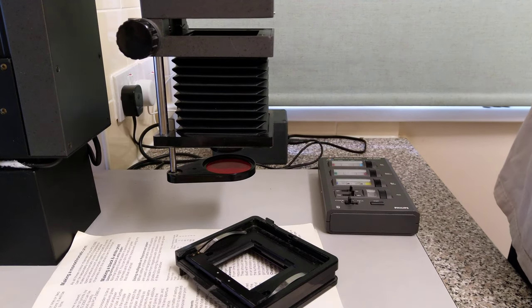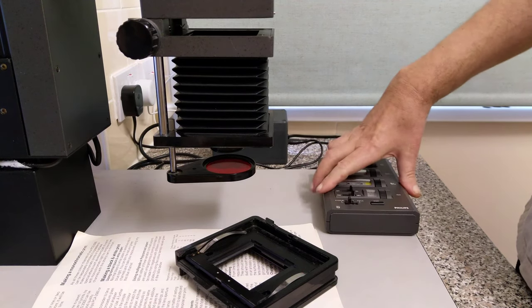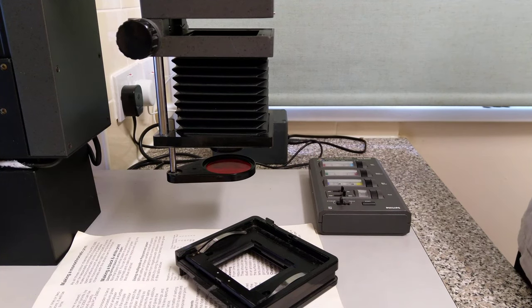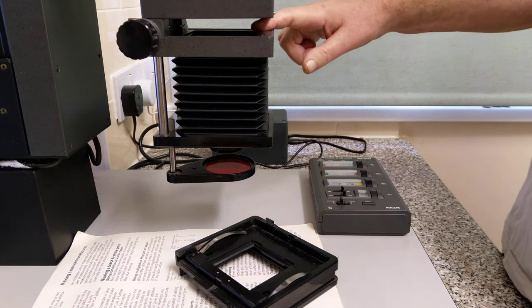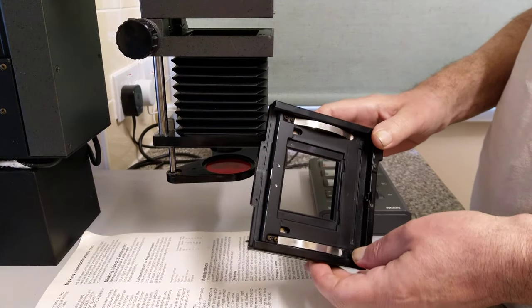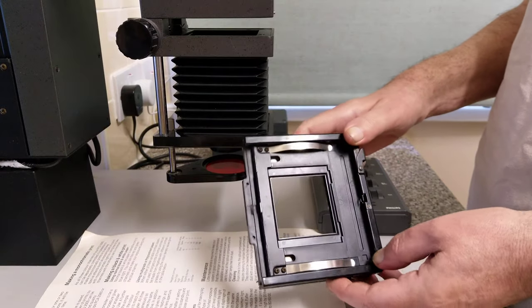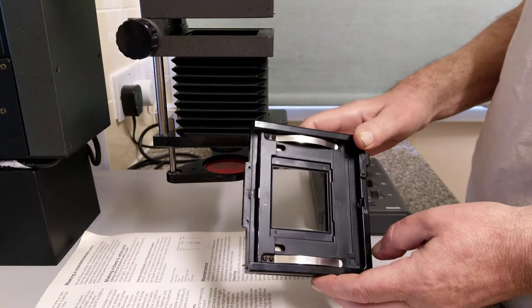Basically on the top here we have a light source, and this is the box that controls everything that goes on inside. So you have a light box, this is the slot where the negative carrier goes, this is my 6x6 negative carrier for 120 film, so the maximum size I can use in this enlarger is 6x6.